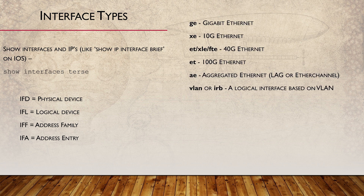For our physical interfaces, the first few letters are the interface type. For example, GE is Gigabit Ethernet and XE is 10G. These don't always make a lot of sense, unfortunately.